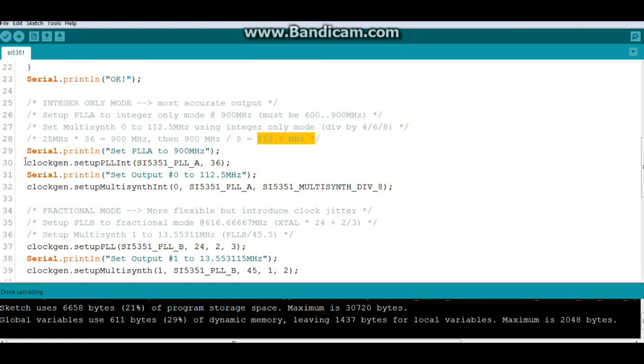And right here you can see the commands ClockGen Setup PLL Integer SI5351 PLLA to 36 that sets it up and then we're going to control the multi-synth so ClockGen.SetupMultiSynth in integer mode which output is it? it's output 0 which phase lock loop are we using? A and then what are we going to divide it by? 8 and that will give us our 112.5 megahertz.